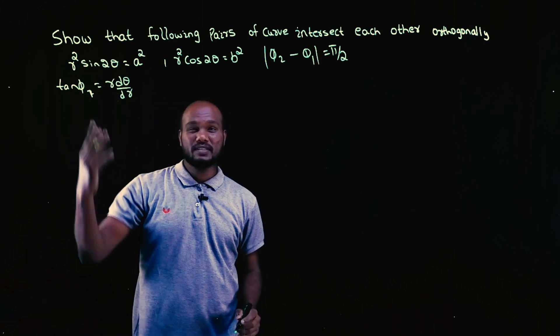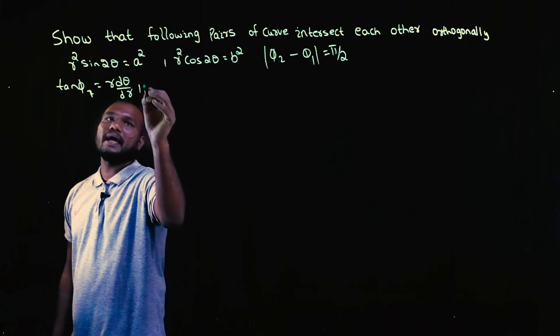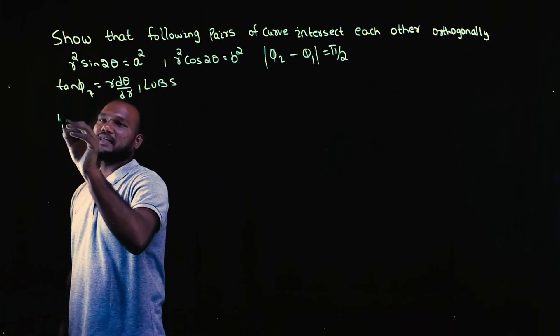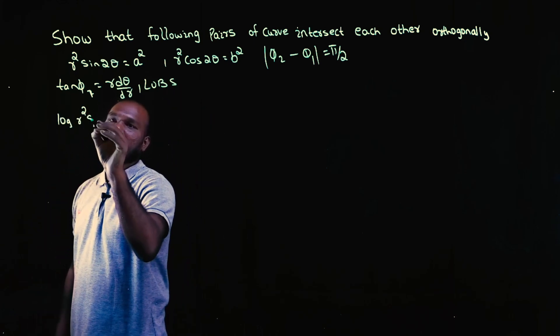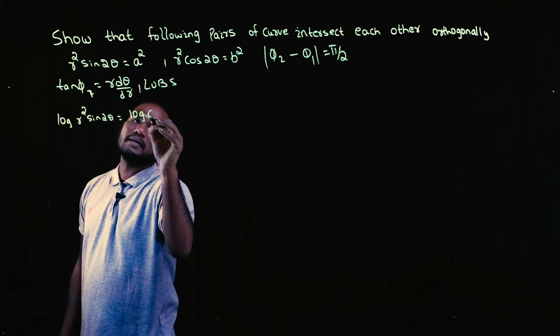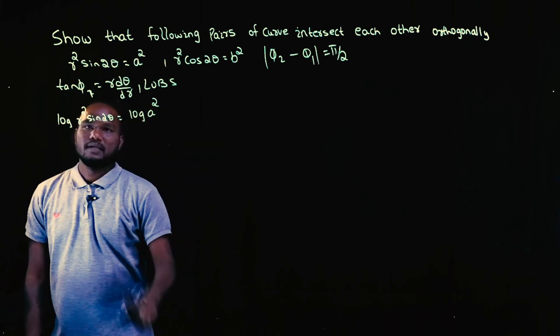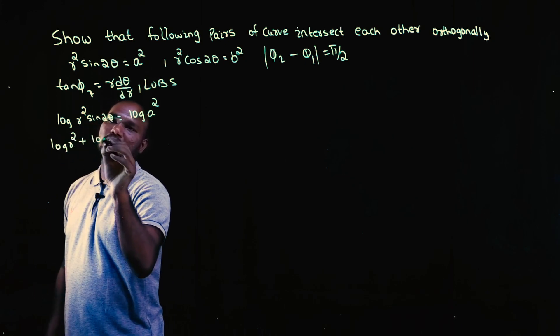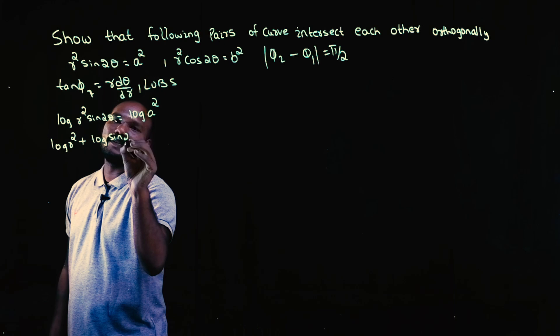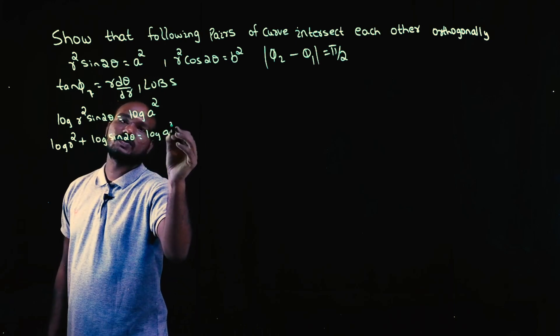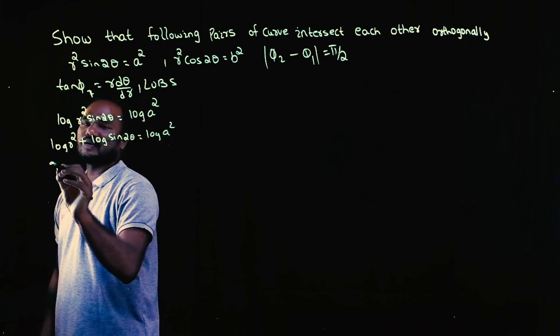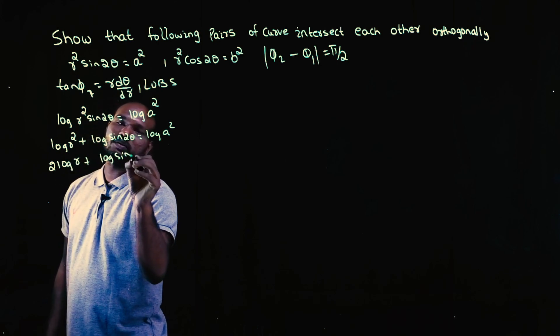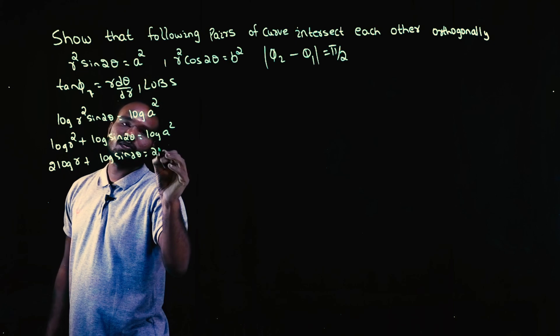To directly see r, there is r squared, looks complicated. So always take LOBS, log on both sides. So let's take that log r² sin 2θ is equal to log a². Log a into b is what? Log a plus log b. Right, this is log a². We can take this to 2 log r plus log sin 2θ is equal to 2 log a.